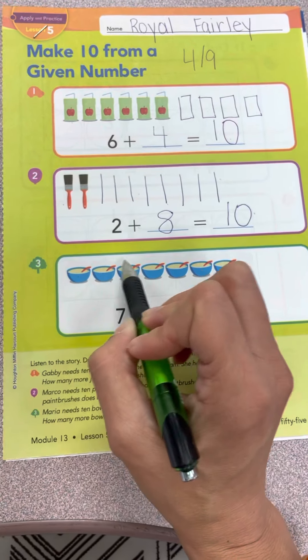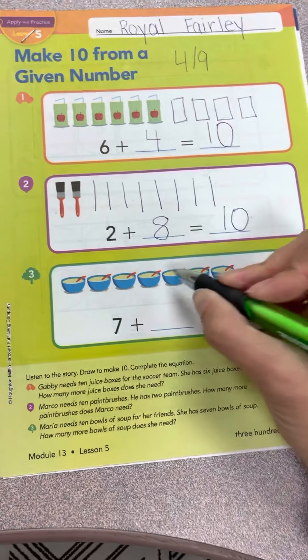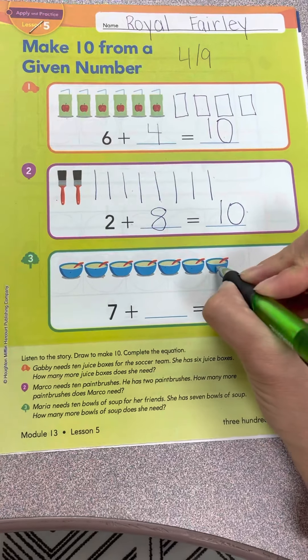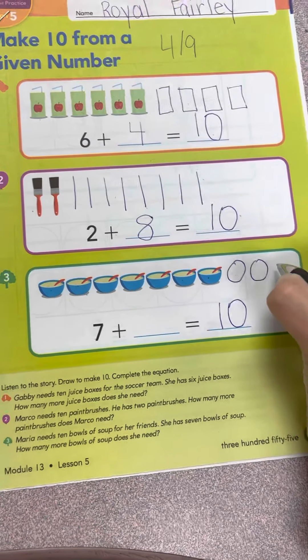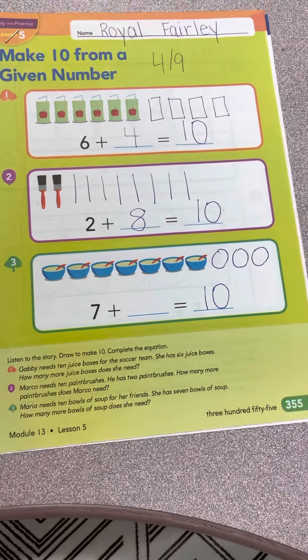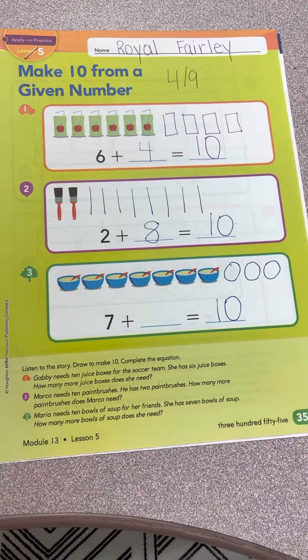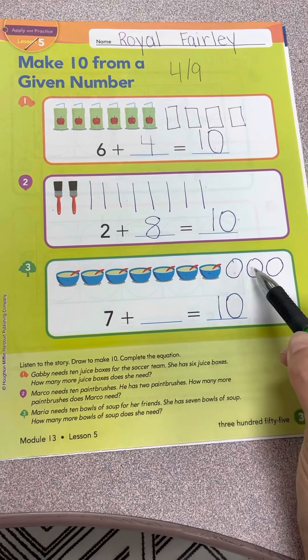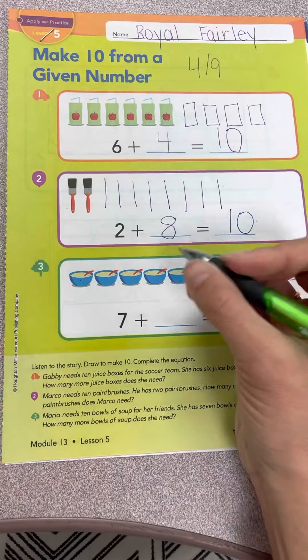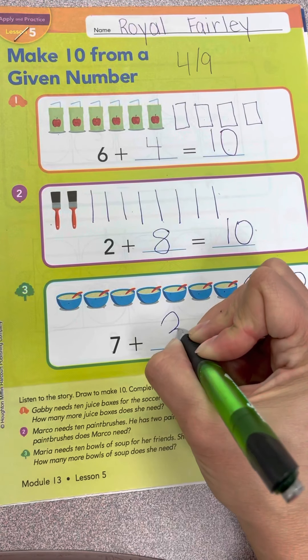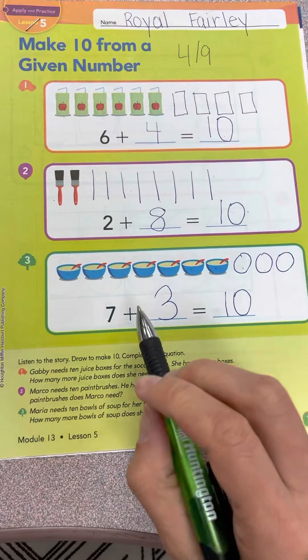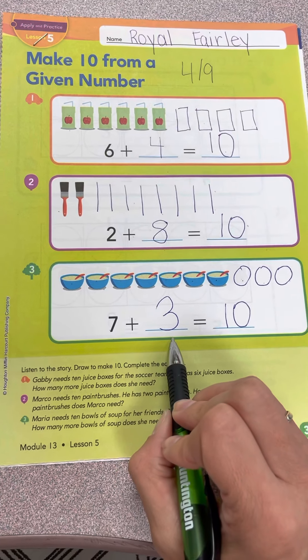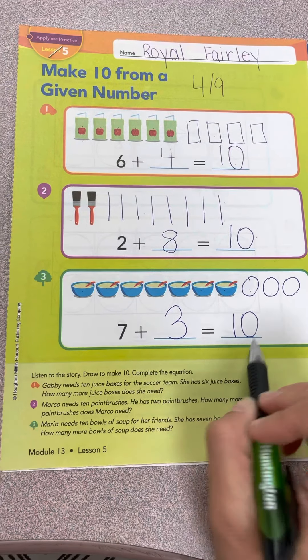1, 2, 3, 4, 5, 6, 7, 8, 9, 10. How many more did we make? 1, 2, 3. Around a tree, around a tree. That is how you make a 3. 7 plus 3 is equal to 10. Let's turn the page.